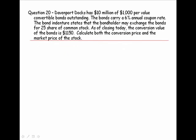Davenport Docks has $10 million of $1,000 par value convertible bonds outstanding. The bonds carry a 6% annual coupon rate. The bond indenture states that the bondholder may exchange these bonds for 25 shares of common stock — that's the conversion ratio. As of closing today, the conversion value of the bonds is $1,150. Calculate both the conversion price and the market price of the stock.